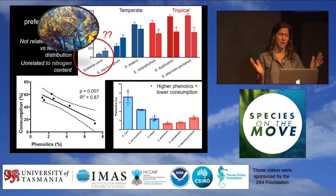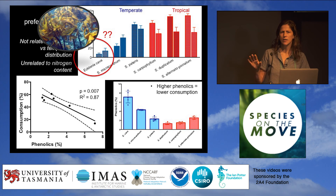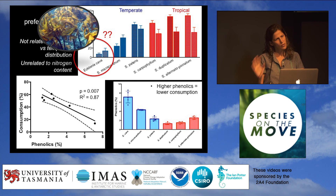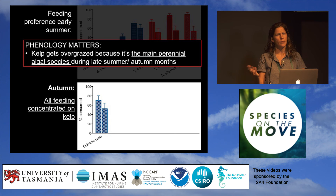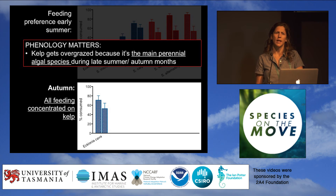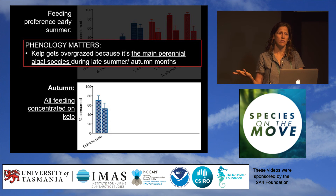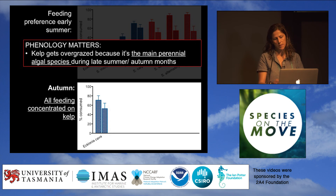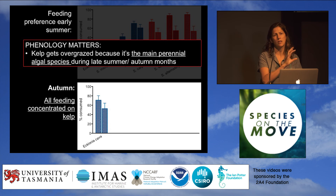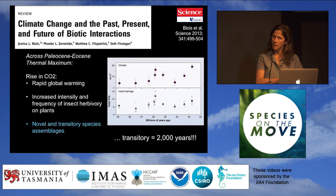This disputes the idea that nitrogen matters, at least in this tropical-temperate transition zone. What really surprised us was that the kelp Ecklonia cava was actually the least consumed of all species. This is the one we know is disappearing, so how come it wasn't being targeted? We repeated the experiment in autumn and found that all feeding was concentrated on this kelp — because there was nothing else around. All the other species we had worked with were ephemeral species that disappeared mid-summer. So phenology does matter: kelps get overgrazed because they are the main perennial species sustained in the warmer late summer and autumn months.